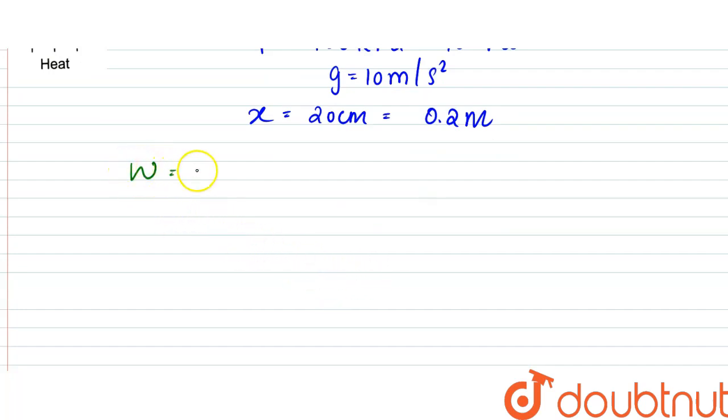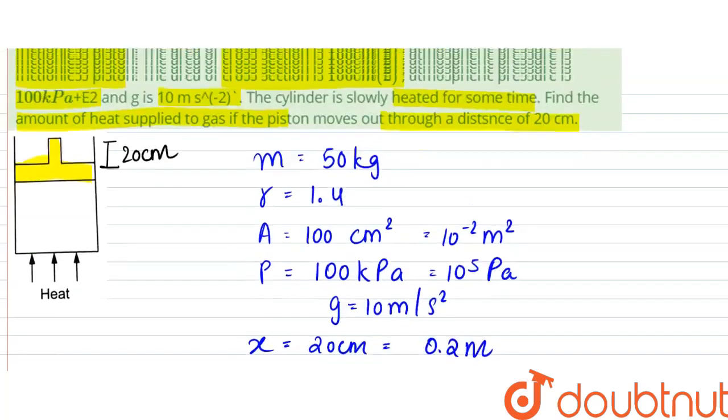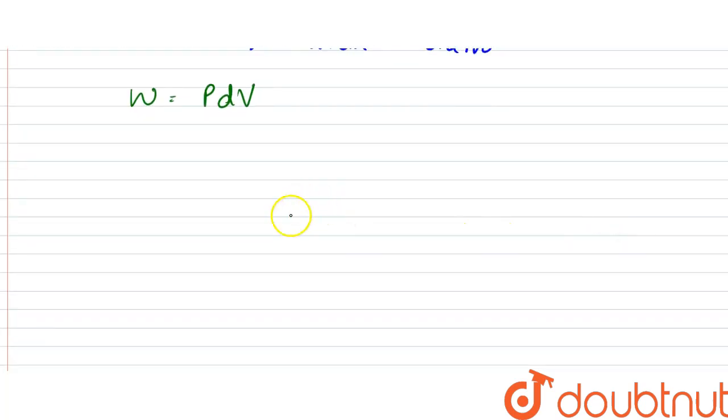Work done is nothing but P dV. P is pressure and dV is the change in volume. P can be written as P naught plus mg by A, that is the total amount of pressure times dV.